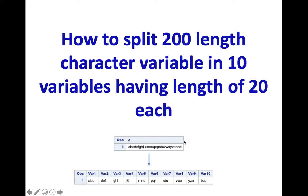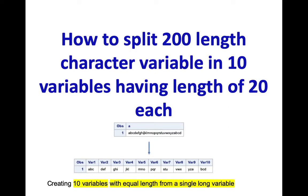Here we have a character variable which has a length of 30. The target is to split it into 10 variables, but the length of each should be 3. The reason I've taken a 30 character length variable instead of 200 is to keep it simple. If I had 200 length it would be much longer and not easy to show here. To sum it up, the task is to create 10 variables with equal length from a single long variable.